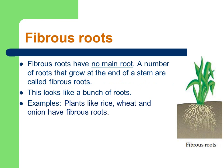Now fibrous roots. Fibrous roots have no main root. A number of roots that grow at the end of the stem are called fibrous roots. This looks like a bunch of roots. Examples: plants like rice, wheat and onion have fibrous roots. You can see in the diagram there is no main root — there are many roots, like a bunch. So this type of roots are called fibrous roots.